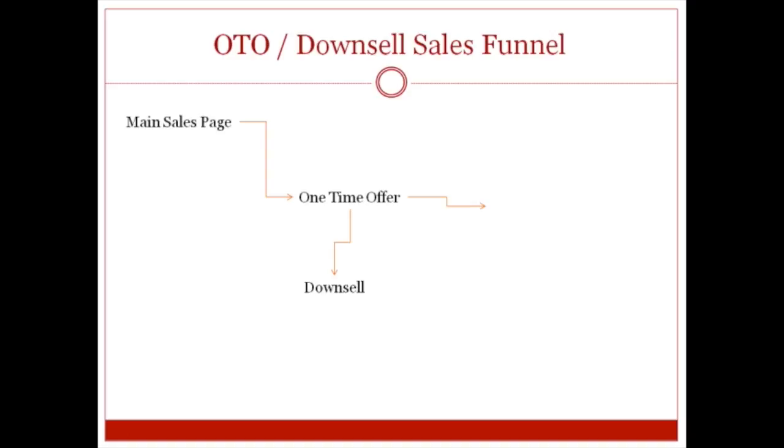Now that you understand upsells and downsells, let me talk about basic sales funnels. Normally your sales funnel looks like this: you have your main sales page, somebody clicks the JVZoo buy button, they order, and then they're directly sent to your thank you page. That's a basic sales funnel, and the majority of you will probably use this one. Because of that, I'll be following a basic sales funnel in the setup process for JVZoo. Now if you choose to add a one-time offer and a downsell, it looks a little different — the customer purchases and then sees the one-time offer before being sent to the thank you page.